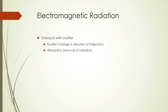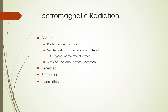Electromagnetic wave interactions with matter involve scatter, which is a change in direction or trajectory, and absorption, which involves the removal of radiation. The radio frequency portion can scatter around large objects like buildings and mountains. The visible portion can scatter from materials where the amount of scattering depends on the type of surface. The x-ray portion can scatter from materials in a process called Compton scattering, which we shall learn about later. Electromagnetic waves can also be reflected, refracted, and transmitted.